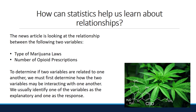The news article is looking at the relationship between two variables: type of marijuana laws and number of opioid prescriptions. To determine if the two variables are related, we must first determine how they may be interacting with one another. We usually identify one variable as the explanatory and one as the response.